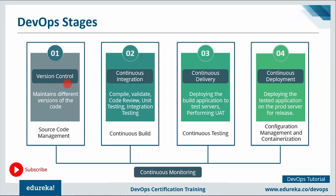Continuous integration means that the moment any developer makes a change in source code, a CI server should pull that code and prepare a build. Build includes compiling the source code, code review, unit testing, integration testing, packaging the application, and more. Then comes continuous delivery, where Jenkins deploys the built application onto test servers for user acceptance testing using tools like Selenium.